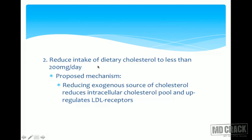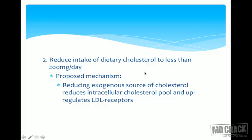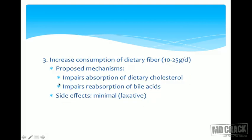Reducing dietary cholesterol to less than 200 milligrams per day works by reducing the intracellular cholesterol pool, which up-regulates hepatic LDL receptors. With more LDL receptors, there is greater uptake of LDL from circulation into the liver, where it can be excreted — thus decreasing circulating cholesterol.